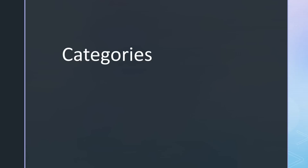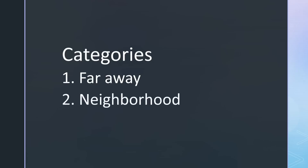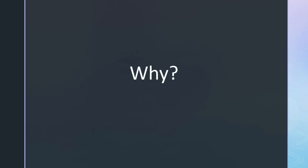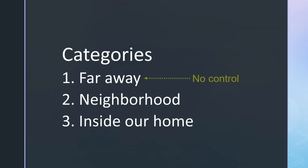First, we classify the sources based on their distance from our home, differentiating between three categories: first, far away; second, neighborhood; and third, inside our home. Why is this classification important? While we have no control over stations located far away, we can influence installations within our homes. For neighbors, it becomes a matter of personal decision.